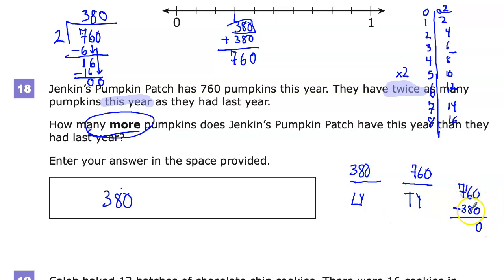I need to regroup here. I can't take 8 from 6. 6 minus 3 is 3. So 380 pumpkins. And you don't have to put pumpkins with it. You just put 380 and move on with your life. So there you go.